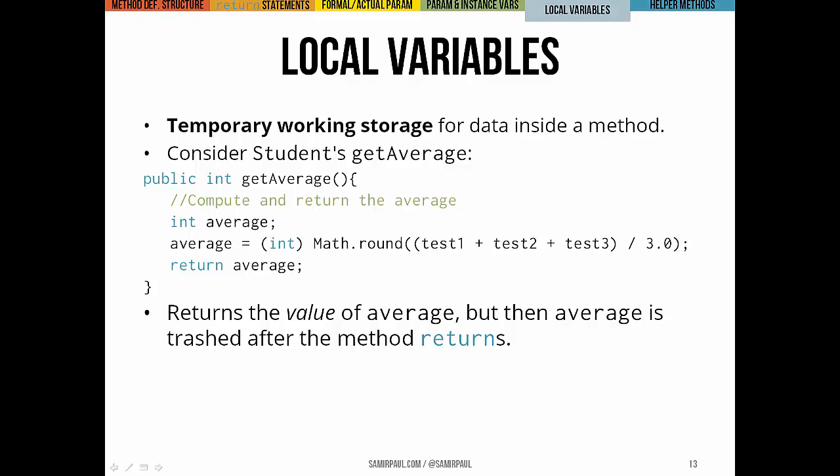You've done this already at this point, but it's good to give it a name. If you think about the student method getAverage, we have some local variables there. For instance, we declare this variable average, which is of type int. And we do a bunch of arithmetic and store the result in average, and then we return average. Now we don't need to remember average after we've returned it. There's no really good reason to do that.